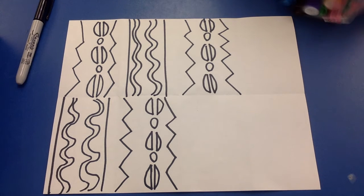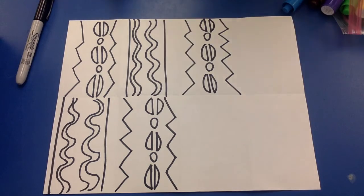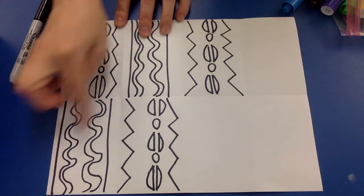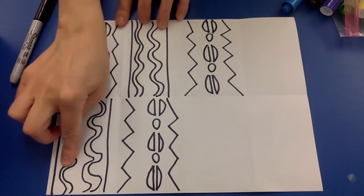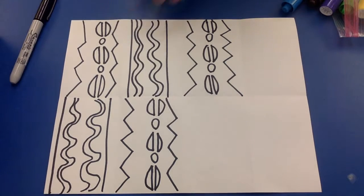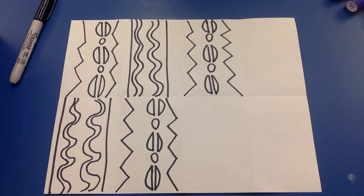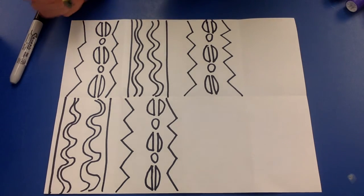But whatever colors you decide to use need to be the same. So for instance, if you choose to do these wavy lines red, all the wavy lines in your artwork will be red. But if you choose to do your coffee bean design green, all of them will be green so that the pattern is the same.